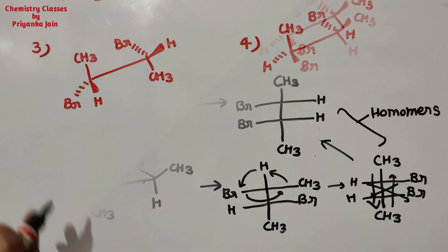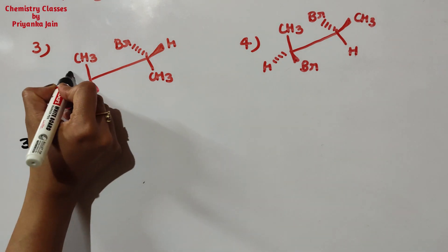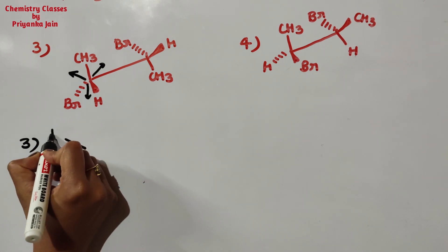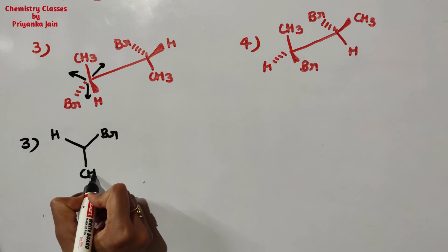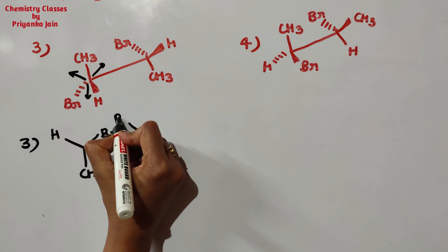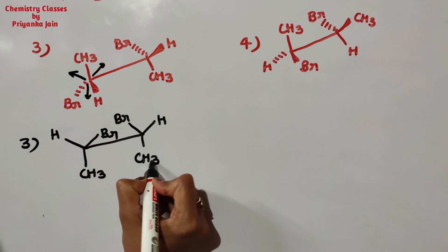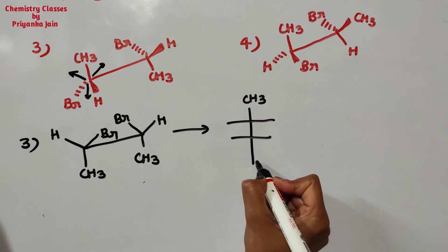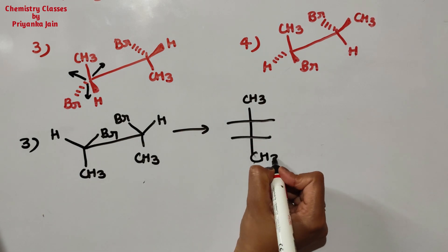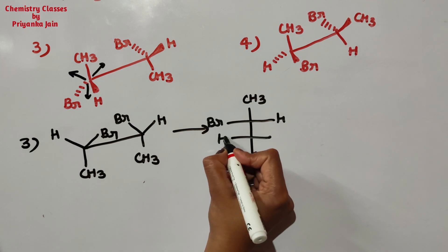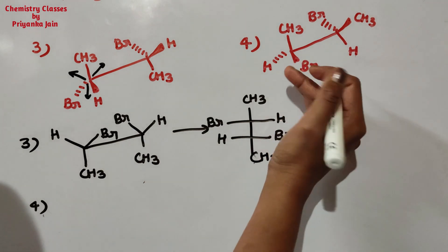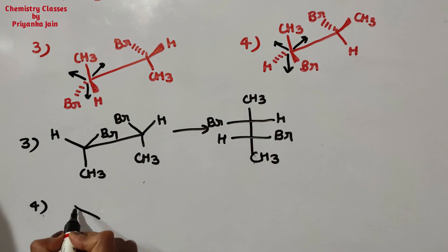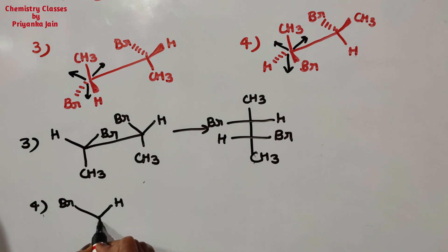Now look at the third structure. Doing the same inversion: here will be hydrogen, bromine, and CH₃; and here bromine, hydrogen, and CH₃. Converting to the Fischer projection: CH₃ goes here, CH₃ goes down, with bromine and hydrogen on the respective carbons. For the fourth structure, inverting the Y: bromine comes here, hydrogen goes here, and CH₃ is here.